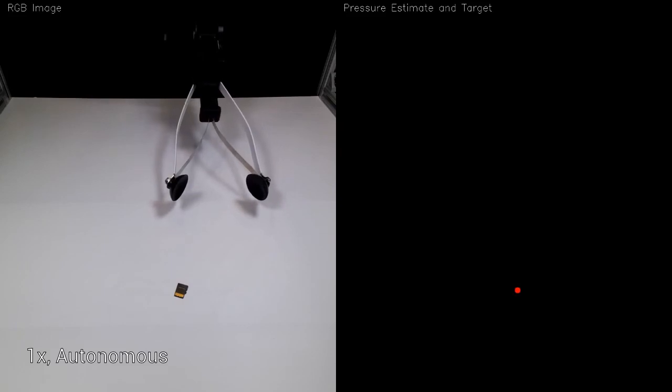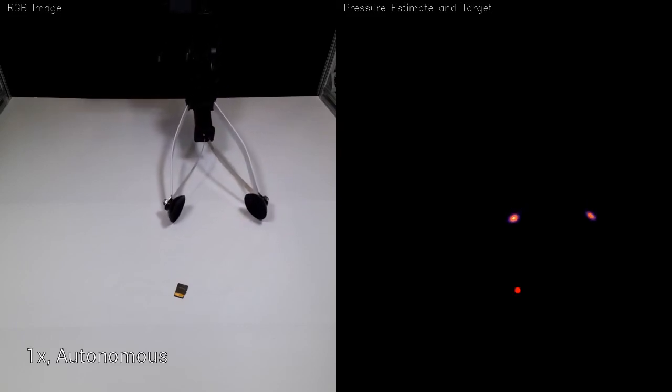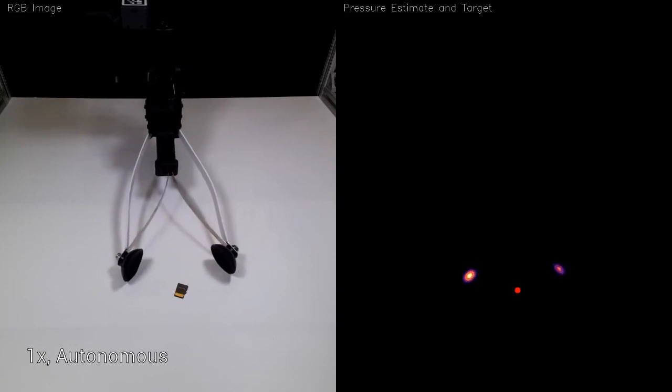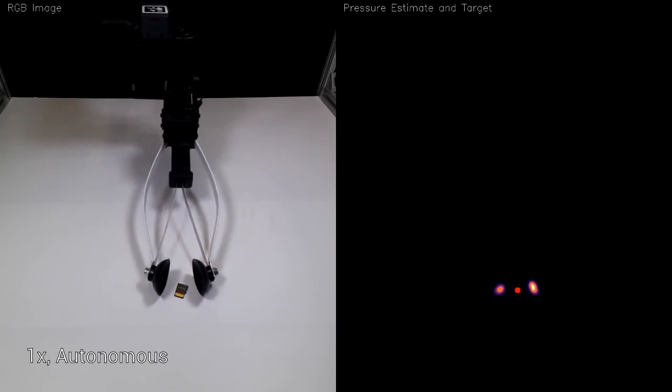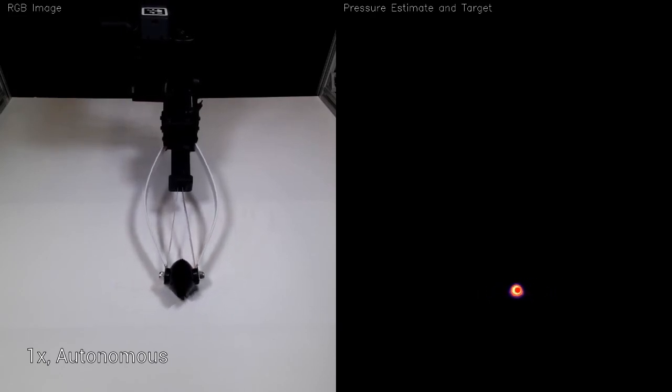We perform visual servoing to accurately control the robot. First, the robot lowers the gripper until it is in contact with the surface. The robot has a control loop to regulate the amount of pressure by moving the gripper vertically, and to move the pressure peaks around the target object. Next, the robot closes the gripper to grasp the object.